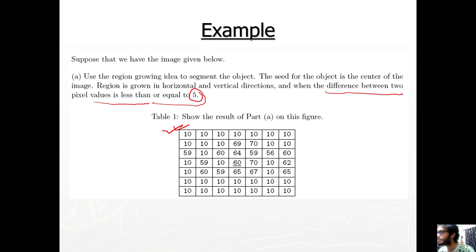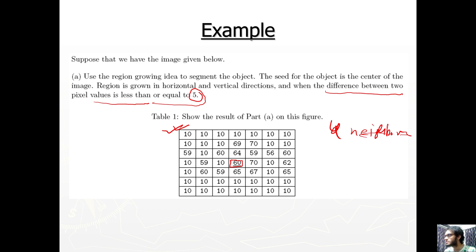The starting pixel is 60. We check its 4 neighbors: 64, 10, 70, and 65. First, checking neighbor 64: the difference between 60 and 64 is 4, which is less than or equal to 5, so the criteria is satisfied and 64 is added to the region. Checking 10: the criteria is not satisfied, so 10 is excluded.